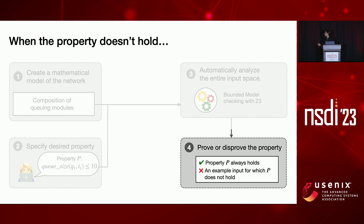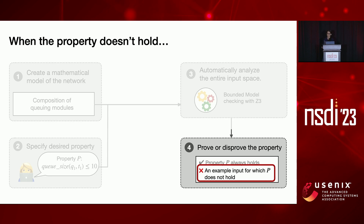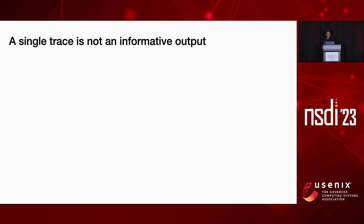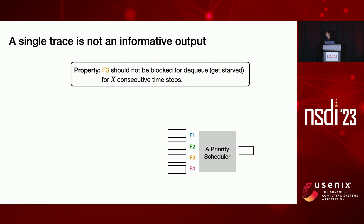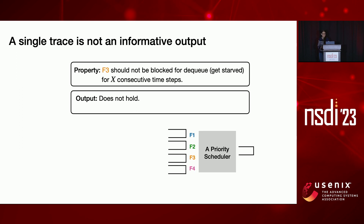The next step is: when the property doesn't hold, our model checker — Z3 — is supposed to give us an input example for which the property is not going to hold. Let's look at what that output looks like with a simple example. Say we're analyzing a strict priority scheduler where F1 is prioritized over F2 and so on, and the property is about starvation — we don't want F3 to be blocked for transmission for X consecutive time steps. We model the scheduler and property, feed them into Z3, and Z3 says the property doesn't hold and returns a particular input.